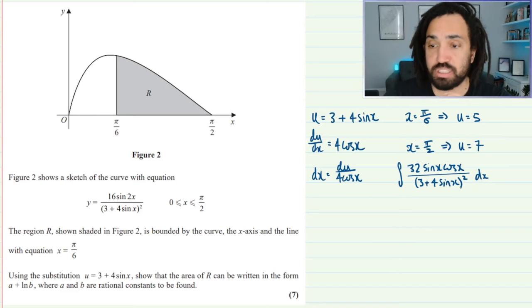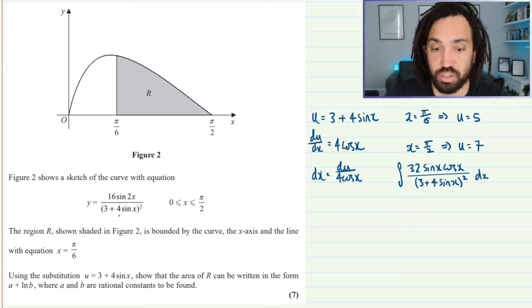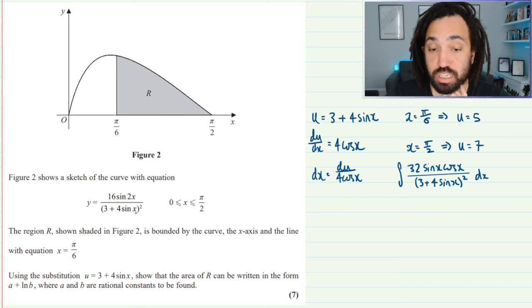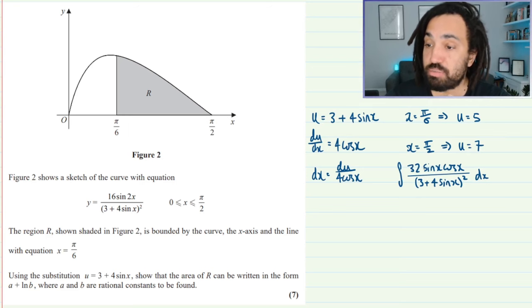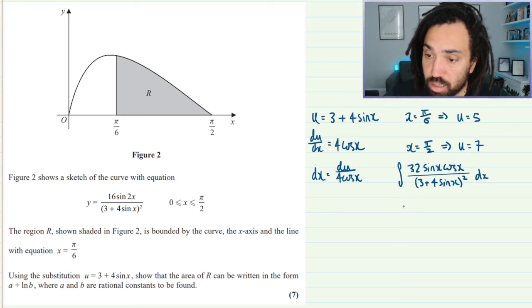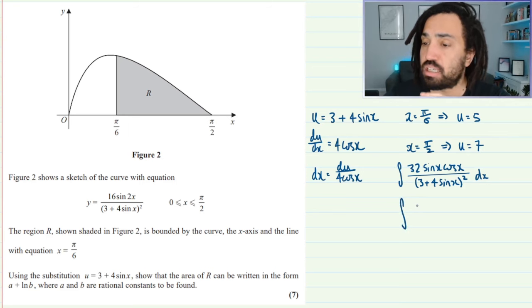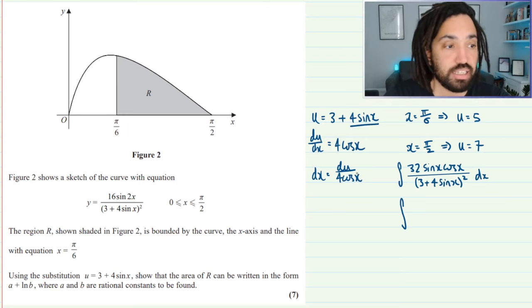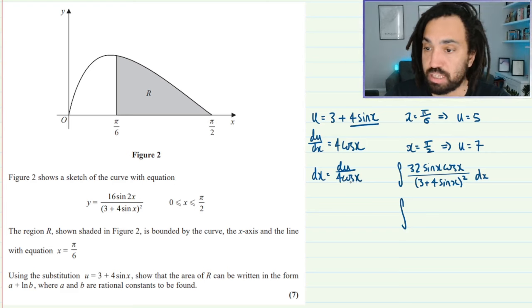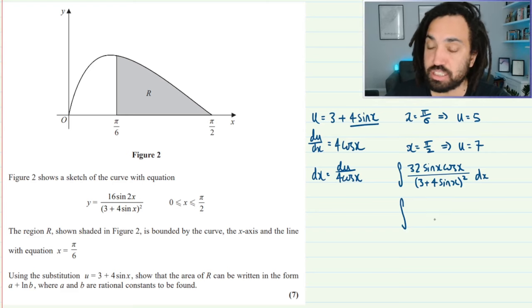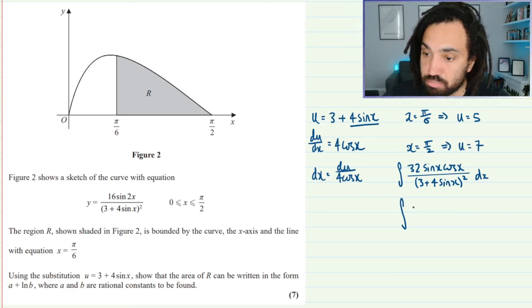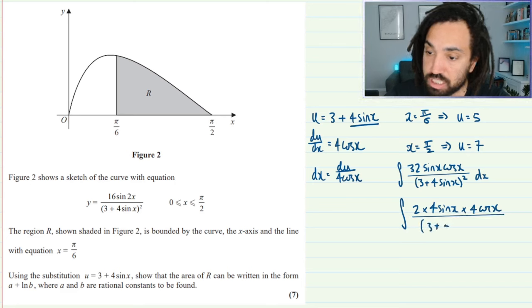Now the bottom is going to be sorted out because we're going to substitute straight in u for 3 plus 4 sin x and then we're going to square it so that's going to be fine. It's the top that's going to need tidying up a little bit. So what I'm going to do is I'm going to write it as 2 times 4 sin x times 4 cos x. I think this way it's just going to make it nice and easy to see what is going to cancel and why.